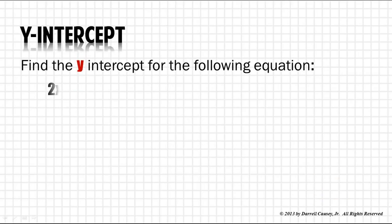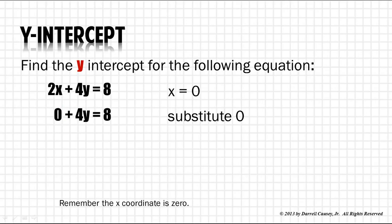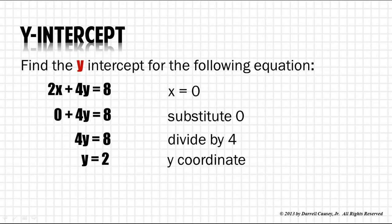Find the y-intercept for the following equation. 2x plus 4y equals 8. This time we'll just put in x as zero because the x-coordinate is always zero in the y-intercept. Substitute and simplify. Divide both sides by 4 and we get y equals 2. And therefore, our y-intercept is 0, 2.